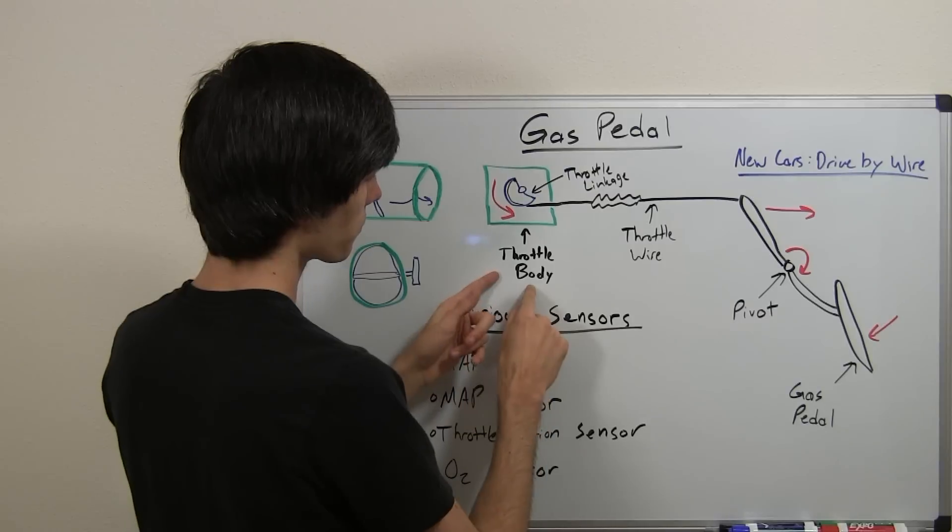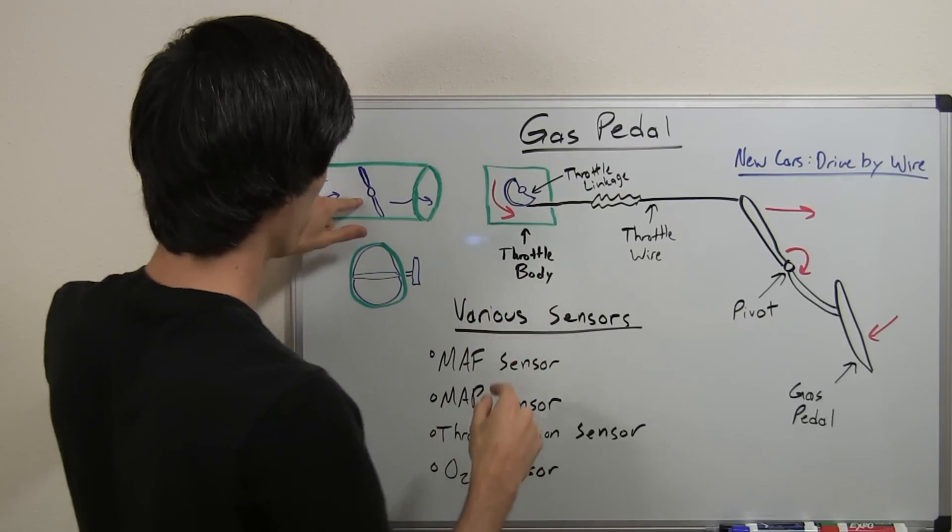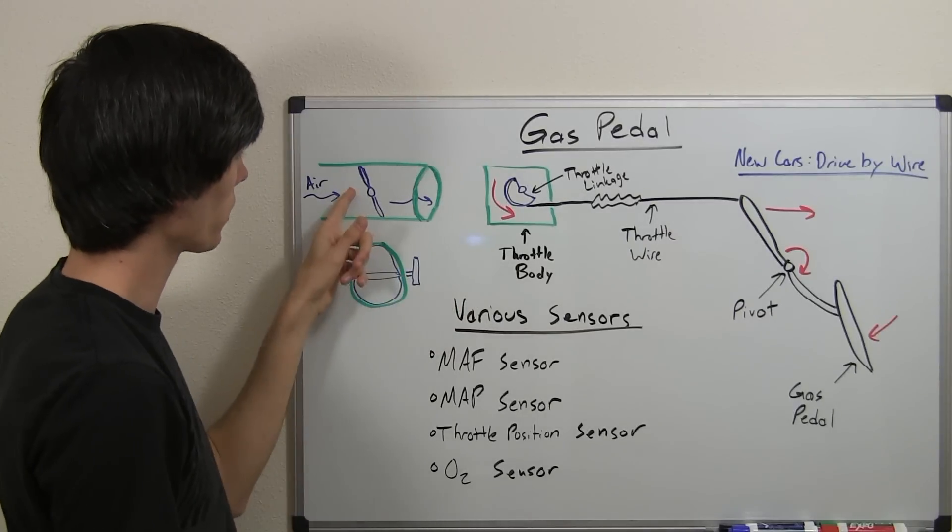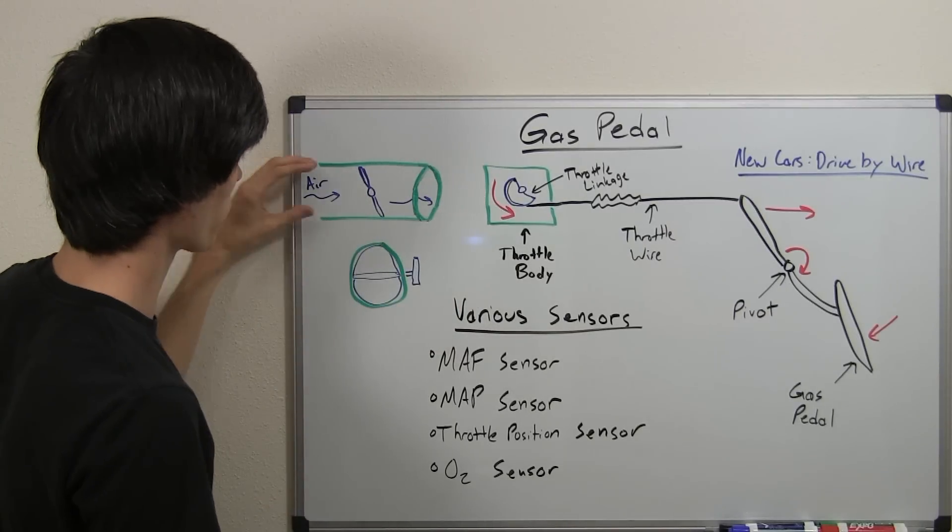Which in turn manipulates a butterfly valve that is located inside of the throttle body. So what this butterfly valve does is, here's your air intake.